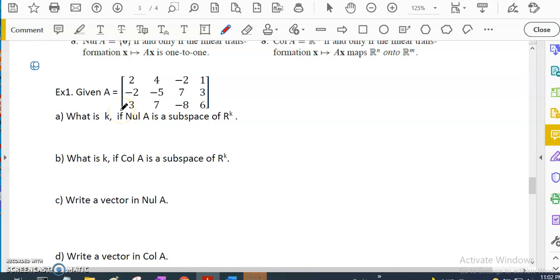Hello, Linear Algebra student. This video is for Chapter 4.2, Part 3. We want to continue with looking at a matrix and determine if a certain vector is in column A or null A, and also find out the dimension of it, or if we can write one vector out that belongs to null A and column A.